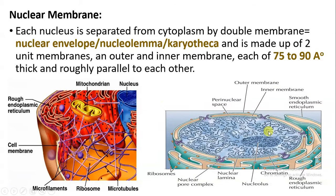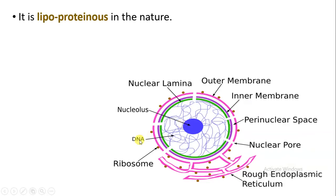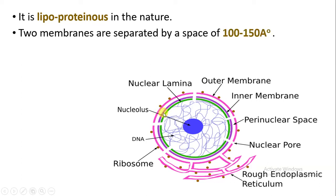When we observe this membrane there are actually two membranes: the outer membrane and the inner membrane. Each layer consists of about 75 to 90 angstrom in thickness, and both the layers are roughly parallel to each other. The nuclear membrane is made up of lipid and protein, that is why they are lipoproteinaceous in nature.